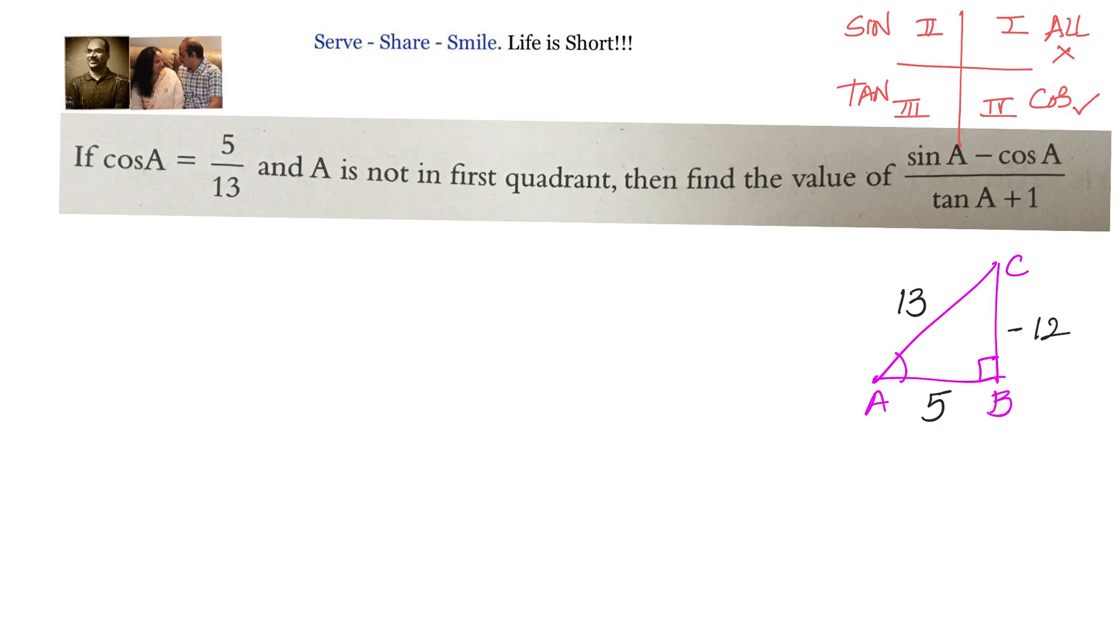Let us write down now what is sin A. Sin A equals to opposite by hypotenuse that is minus 12 by 13 and tan A equals to opposite by adjacent. This is our opposite side, this is our adjacent and this is our hypotenuse. Opposite by adjacent tan A that is minus 12 by 5.